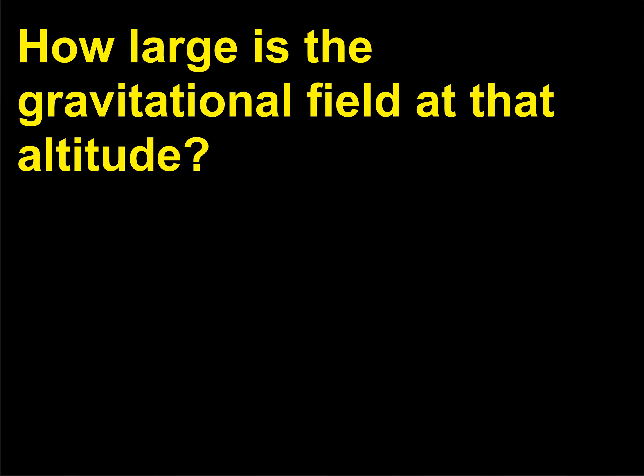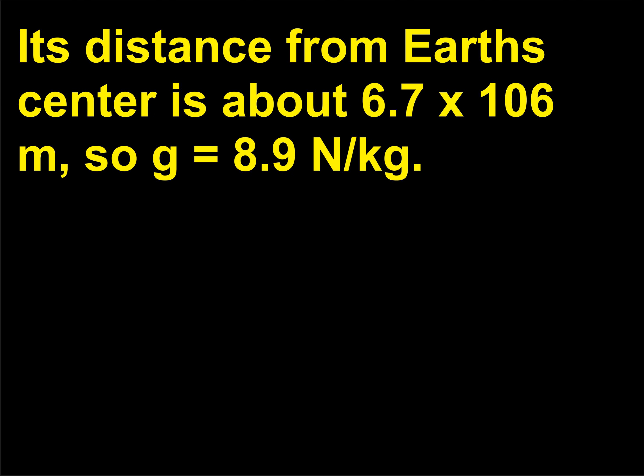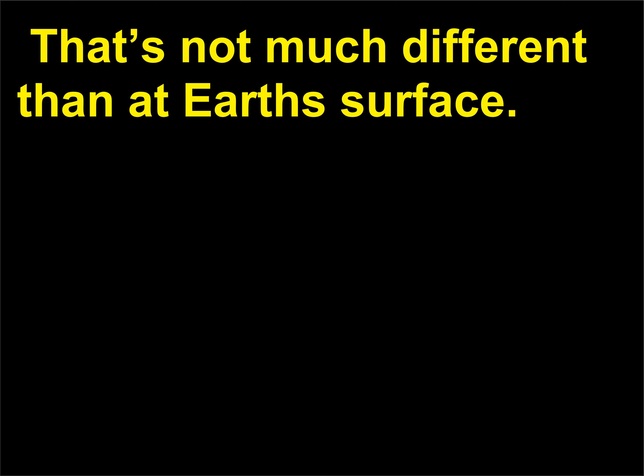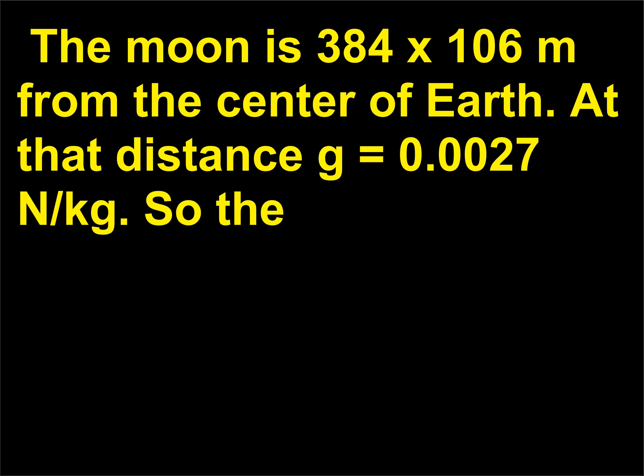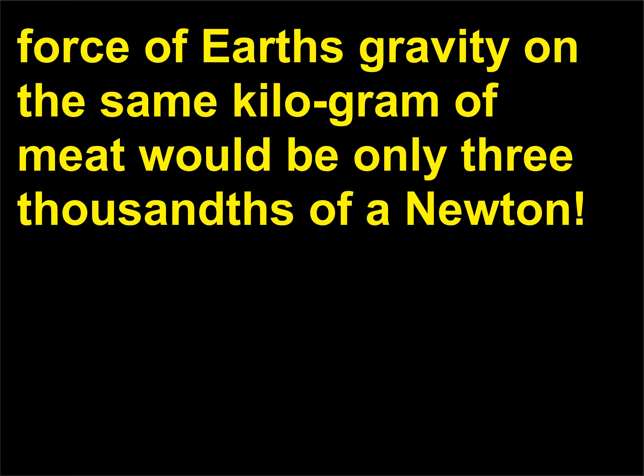How large is the gravitational field at that altitude? The International Space Station's distance from Earth's center is about 6.7 × 10⁶ m, so g equals 8.9 N/kg — not much different than at Earth's surface. The moon is 384 × 10⁶ m from the center of Earth. At that distance, g equals 0.0027 N/kg, so the force of Earth's gravity on the same kilogram of meat would be only 3 thousandths of a newton.